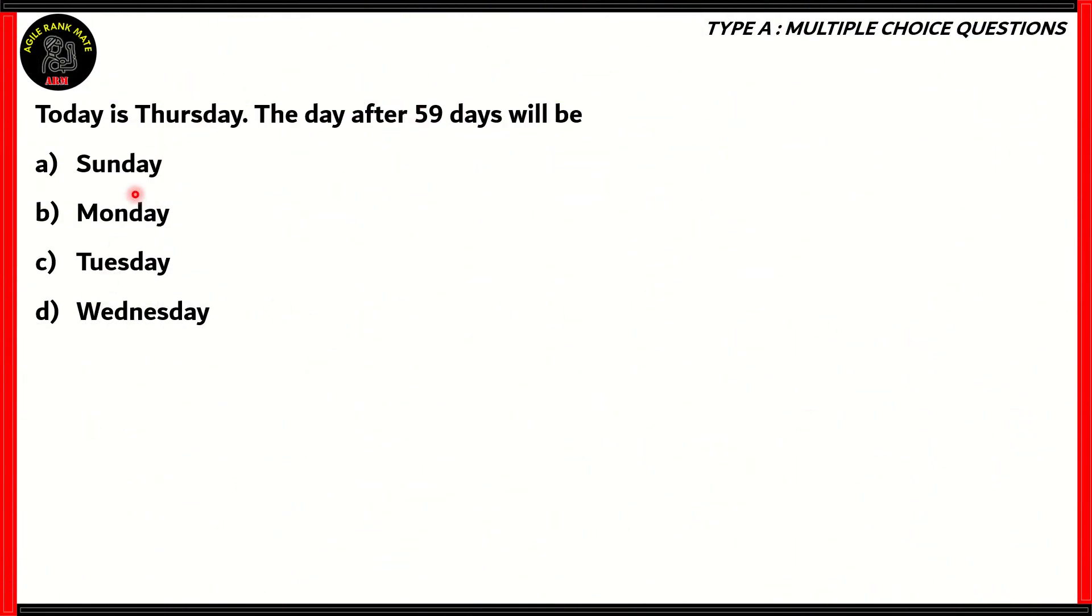First question: Today is Thursday. The day after 59 days will be Sunday, Monday, Tuesday, or Wednesday. We're looking at a question of days, dates, and time. So how do we solve this question? Well, to start off...